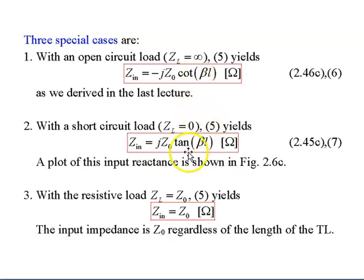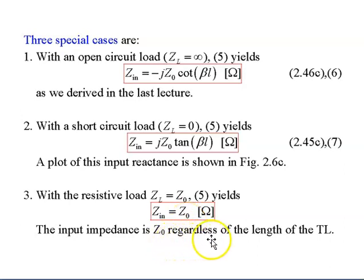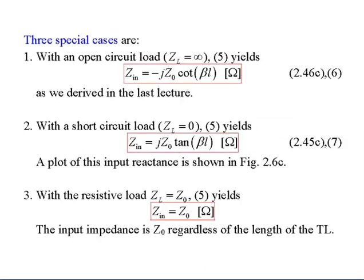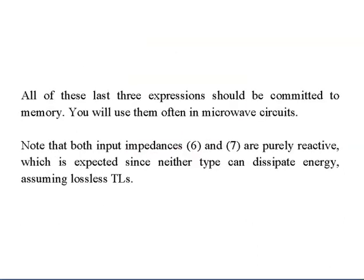These two cases deal with reactance. The third case is a resistive load where ZL equals Z0 — when the load impedance equals the characteristic impedance, Zin equals Z0, regardless of the length of the transmission line. This is the ideal case. All three expressions should be committed to memory, as they are used frequently in microcircuits. The open and short circuit input impedances are purely reactive (−j and +j), as expected, since neither can dissipate energy on a lossless transmission line.